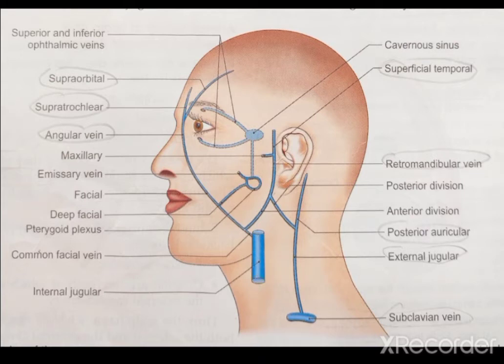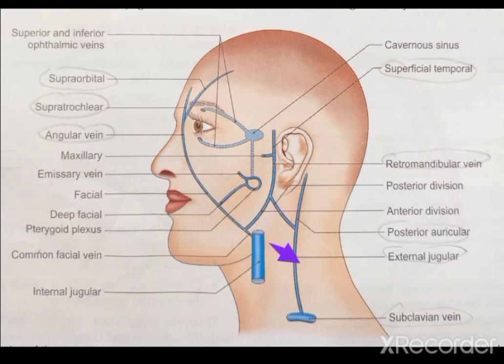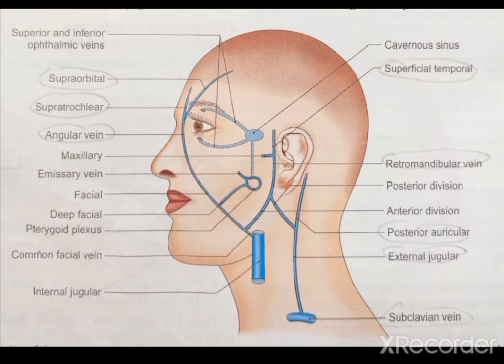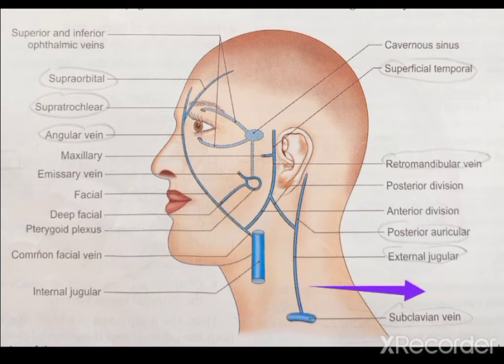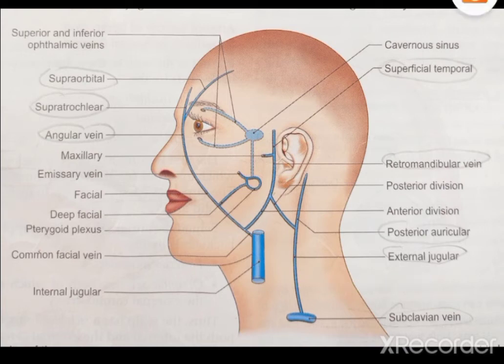The posterior division of the retromandibular vein mixes with the posterior auricular vein to together form the external jugular vein, which drains into the subclavian vein. The suboccipital veins terminate in the suboccipital venous plexus.